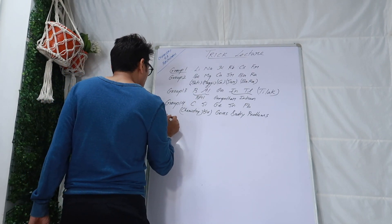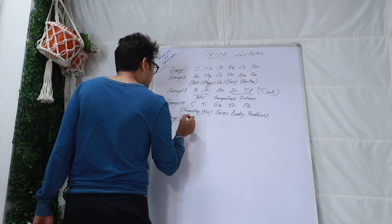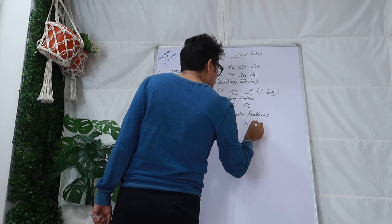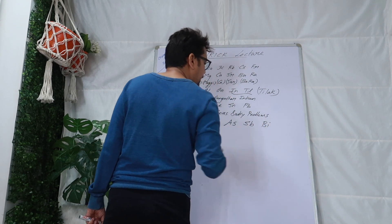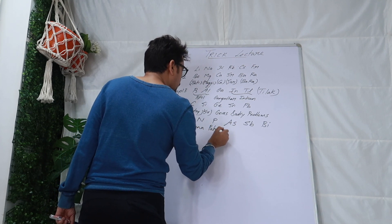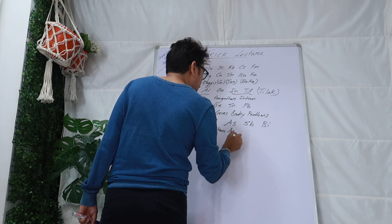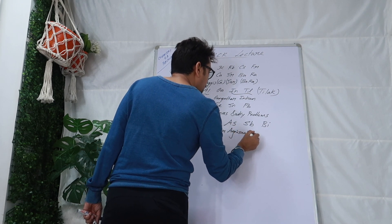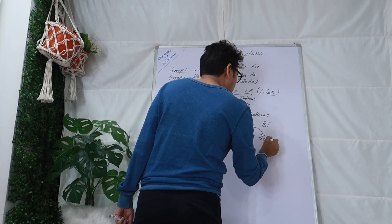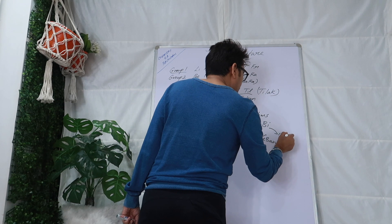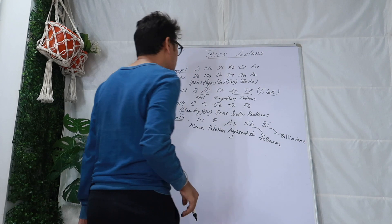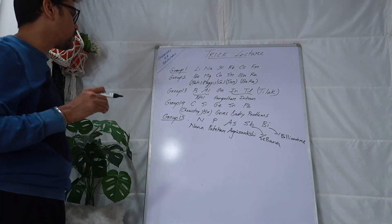Group 15 mnemonic is: Nana Partaker Agni Sakshi Se Bana Billionaire. Nana is nitrogen, Partaker is phosphorus, Agni Sakshi is arsenic (a very famous movie of Nana Patekar), Se Bana is antimony (Sb), and Billionaire is bismuth. So group 15 is: nitrogen, phosphorus, arsenic, antimony, bismuth.